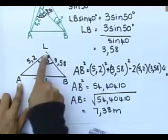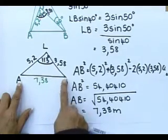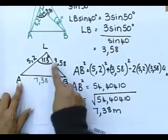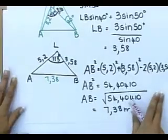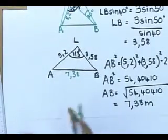5.2, multiply by 3.58. There are my two sides. There's my included angle, 113. Work out the area for me.